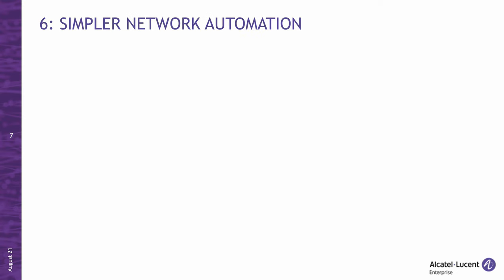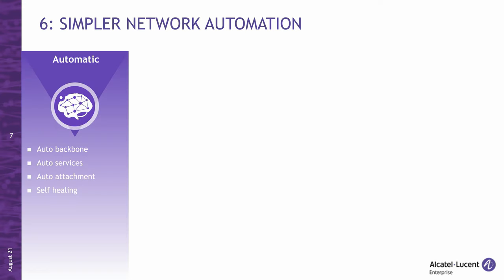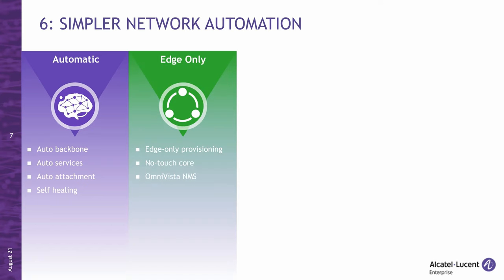Number six: SPB comes with simpler built-in network automation. Right out of the box, when you interconnect the switches, they automatically create an SPB backbone without you having to type a single CLI command. SPB services are also automatically created for the traffic that is received. Attachment of other devices is automatic as well — whether ALE or third-party switches, hypervisors in the data center, or wireless access points. The intelligent fabric detects the connection and self-configures, making it self-healing: when something fails, disconnects, or reconnects somewhere else, the change is detected and the neighbor reconfigures on the fly. Even if you prefer manual configuration, any service configuration is done on the edge nodes only, so there is no touch required on intermediate core nodes.